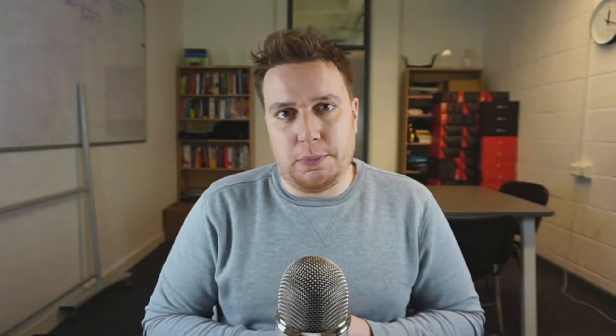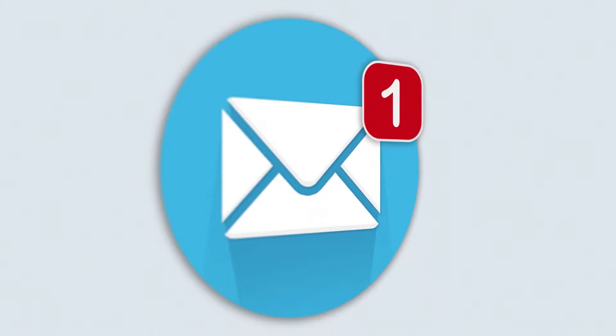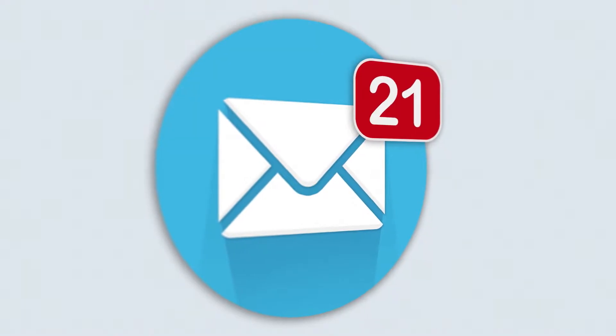There are two main protocols by which internet data is transmitted: TCP and UDP. The best way to remember these is to think of them like shipping options for the internet. TCP is the super reliable shipping option — it makes sure that the data it sent has been successfully received by the recipient. If it works out that it hasn't, it will simply resend it, protecting the quality of the data, making it the ideal protocol for things such as file downloads and emails.